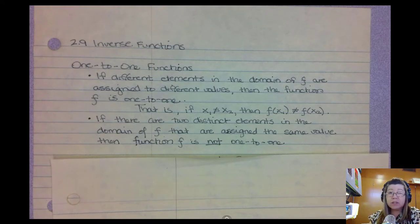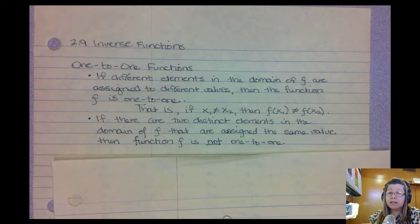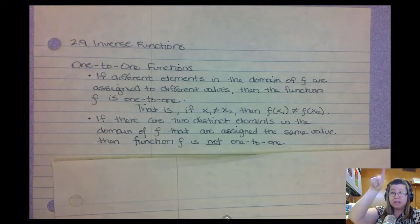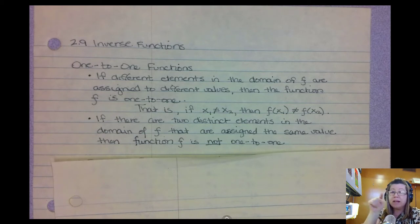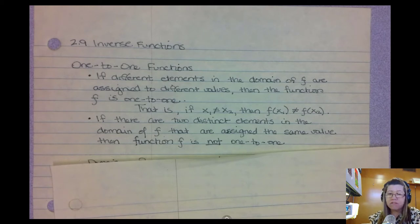A line is a really good example of a one-to-one — as long as that line is not vertical or horizontal, it is a one-to-one function. Parabolas have problems because even if they open up or open down, you can have two x values that go to the same y value. A parabola is not a one-to-one function. Pretty much every single x has only one y it can go to.